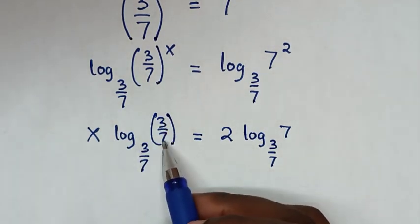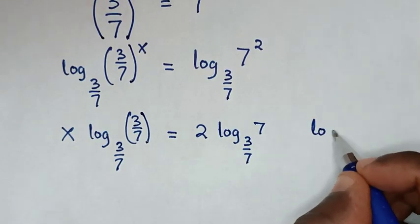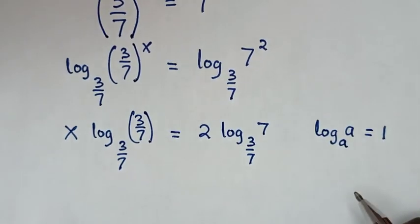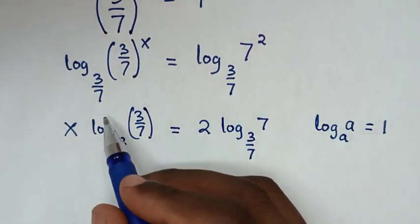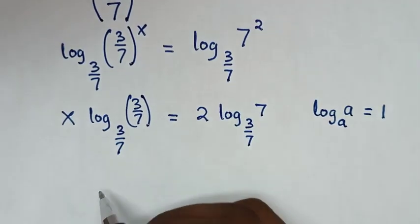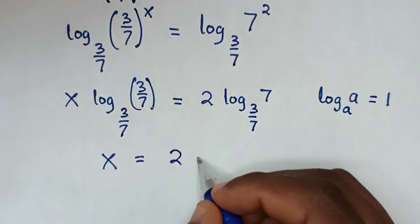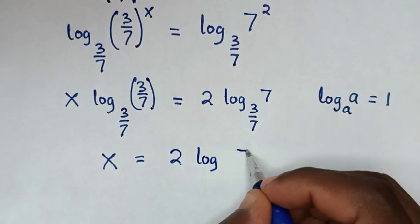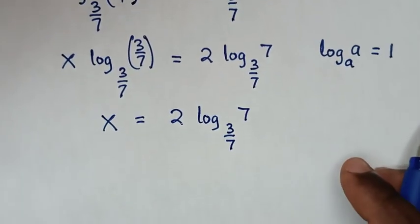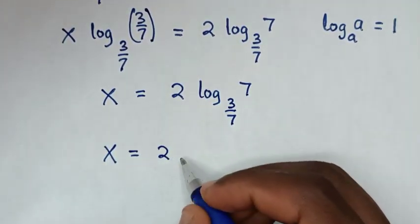Log of (3/7) base (3/7) is in the form of log base a of a, which is equal to 1. So here this equals 1, then 1 times x is x, which is equal to 2 log base (3/7) of 7.